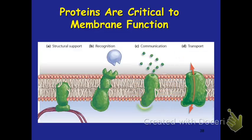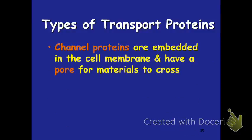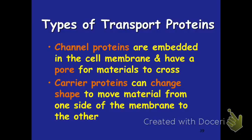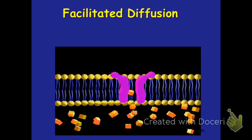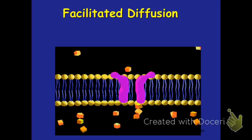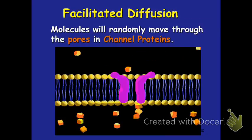The proteins in the membrane provide structural support, recognition, communication, and transport through — and we're focusing most on their role in helping with the transport of molecules through. The first type of transport protein is a channel protein, which acts like a little pore to help move materials from one side to the other. The second type is a carrier protein, which actually changes shape to move the material from one side to the other. Carrier proteins can be used in either facilitated diffusion or active transport. You can see the little orange molecules moving through the protein channel — these are channel proteins providing pores for molecules to get through.